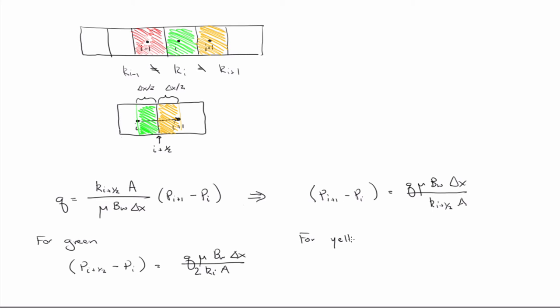And then likewise for the yellow, we have that P_i+1 minus P_i+1/2 is equal to Q mu over K_i+1 A times delta x over 2. So that's essentially just the same equation. Delta x over 2 appears. And now, since we're in the yellow, we're completely in the i+1 grid block, so the permeability is K_i+1.